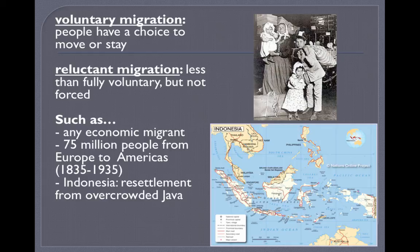People resettled from an overcrowded Java somewhere else. If there was enough room, they might have stayed. If there were enough opportunities for Europeans in the mid-to-late 1800s and early 1900s, they might have stayed. And if economic conditions were great in whatever home country economic migrants come from, they probably would have stayed.